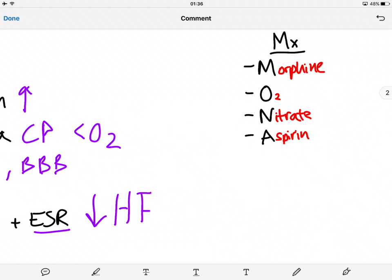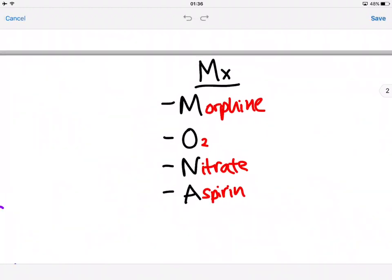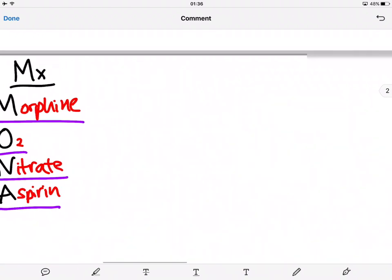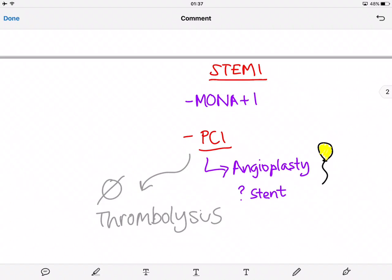The management mnemonic I remember is MONA: morphine, oxygen but only if it's needed - if oxygen is 98, 99, 100, you wouldn't give oxygen. Some guidelines say if it's around 92 or below, give oxygen. You give nitrates, GTN spray sublingually, and aspirin as an antiplatelet.